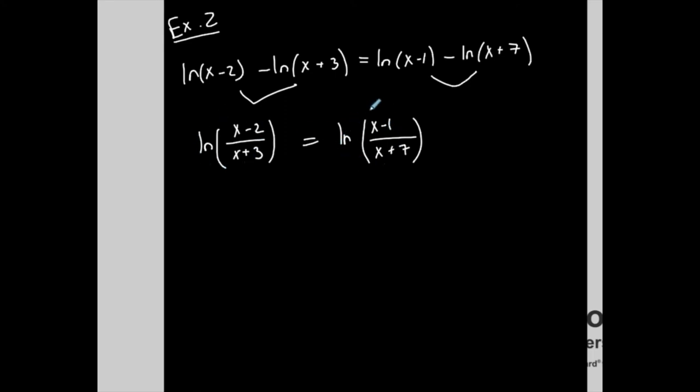I have a single log on the left and a single log on the right. They're base e. They match. So same thing as before. I could drop the logs because what's going to create equality? If these are the same, then the rest of it has to be equal. So x minus 2 over x plus 3 is equal to x minus 1 over x plus 7.